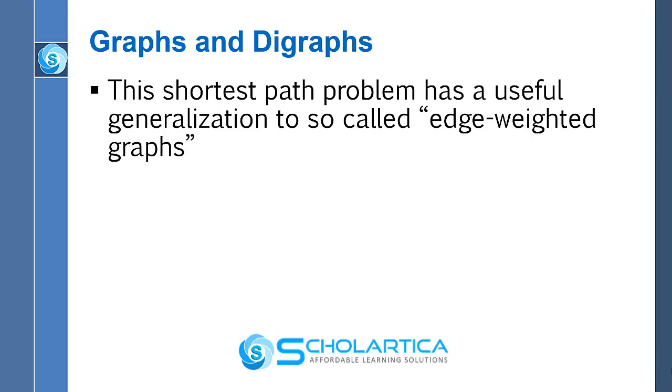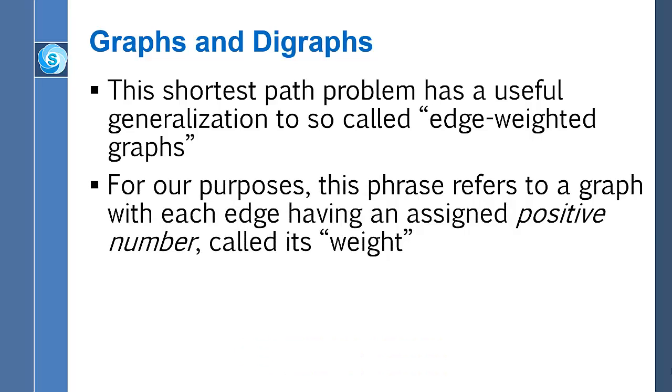An edge-weighted graph is often just called a weighted graph, but it more specifically should be called an edge-weighted graph. So what is that? Well, it's not complicated. An edge-weighted graph consists of a graph together with an assignment of a positive number to each of the edges of the graph. The positive number that's assigned to an edge is said to be the edge's weight.